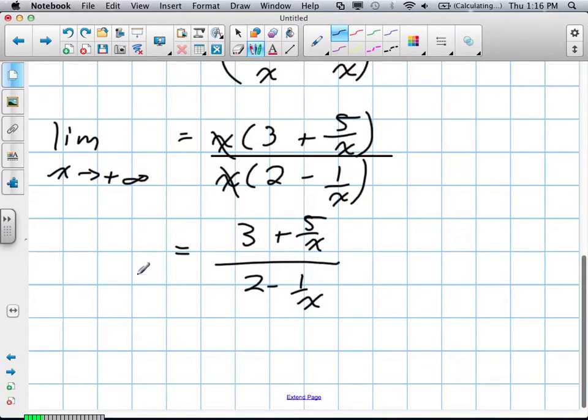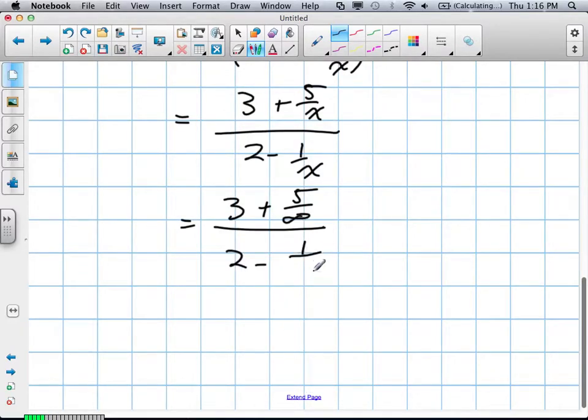We're now going to take infinity again and plug it in for our x values. That's going to give me 3 plus 5 divided by an infinite number, all divided by 2 minus 1 divided by an infinite number. We know when we divide by these infinite numbers, we're essentially creating zeros here. So we're left with a value of 3 over 2.